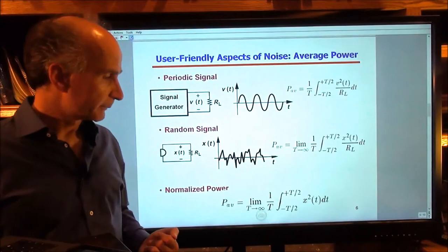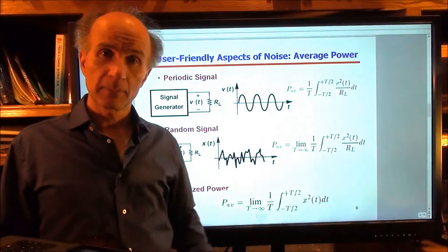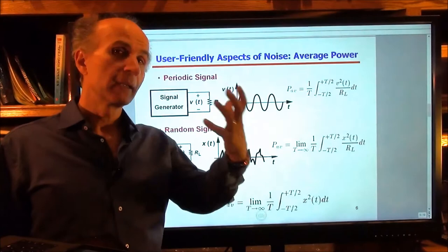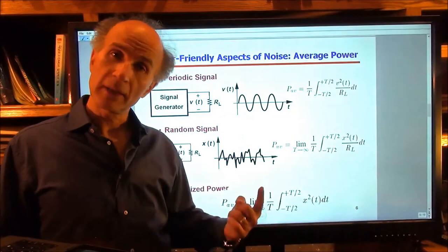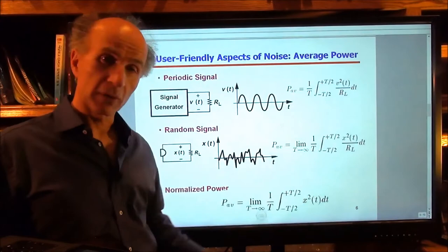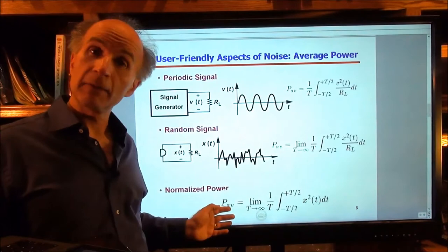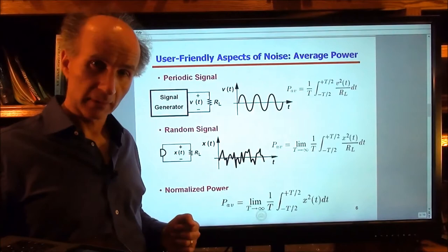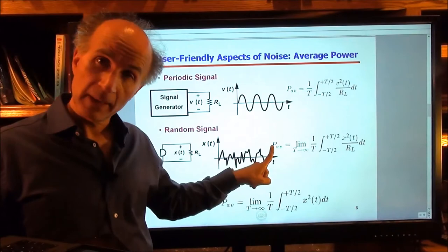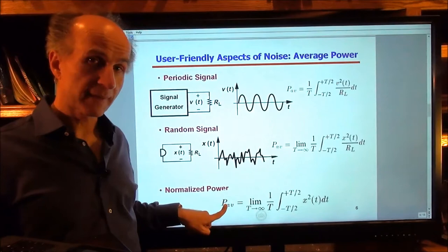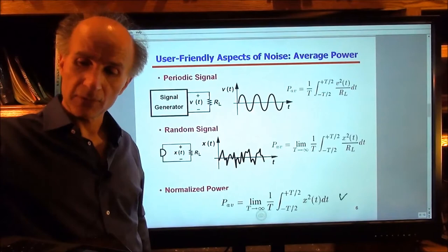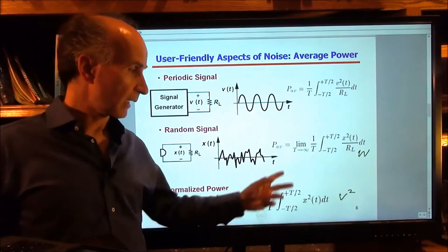In practice, we don't like to keep the RL because in many of our circuits there is no physical power delivered to an RL. One view is we just pick RL to be 1 and call it normalized power. Another view is we just calculate this expression, and if there is an RL at some point, we divide by RL to find the average power. The important point is that the unit of average power with RL is watts, whereas without RL the unit is volts squared. So we have to remember that this unit is volts squared — otherwise they are similar and we can use them as necessary.